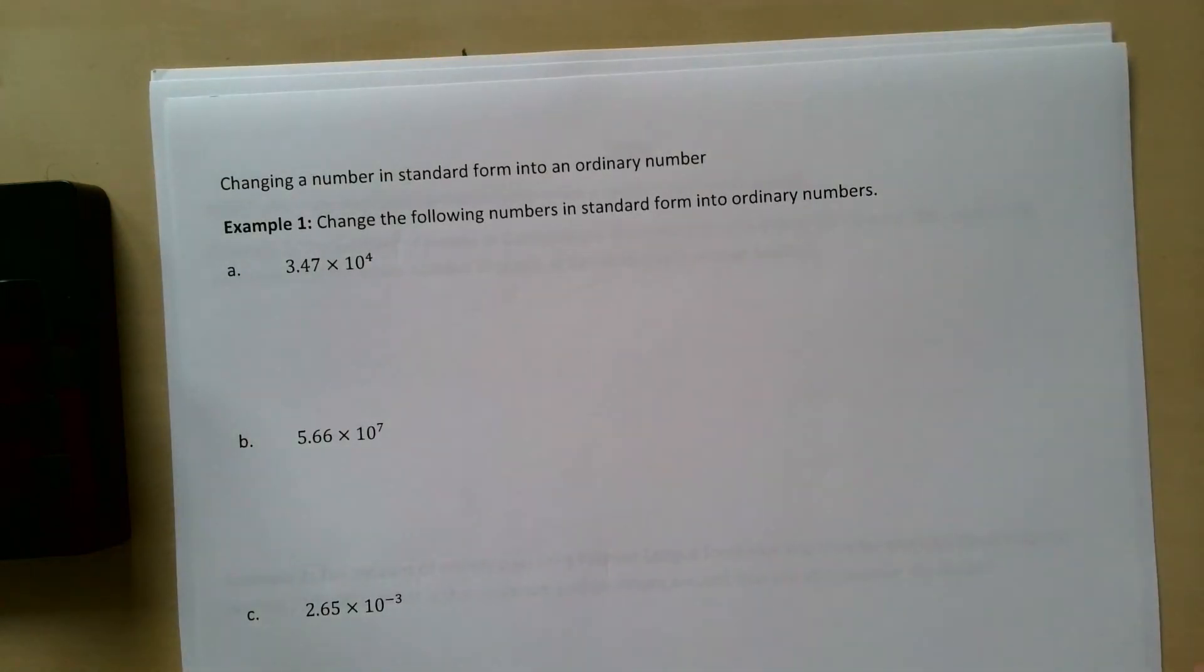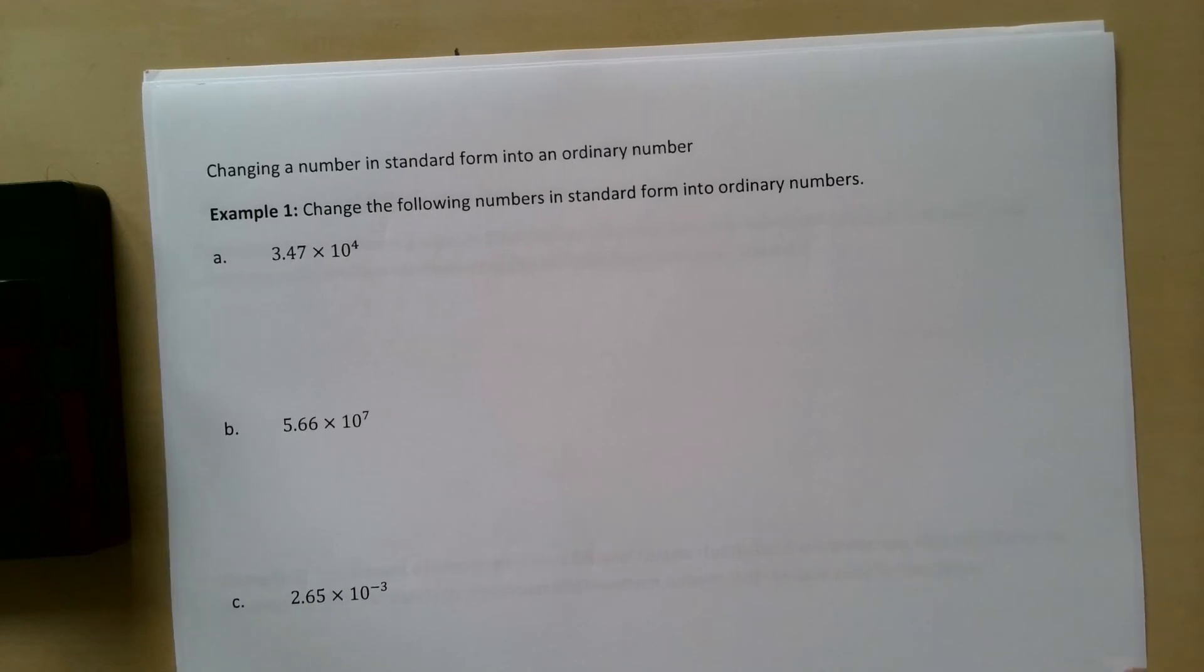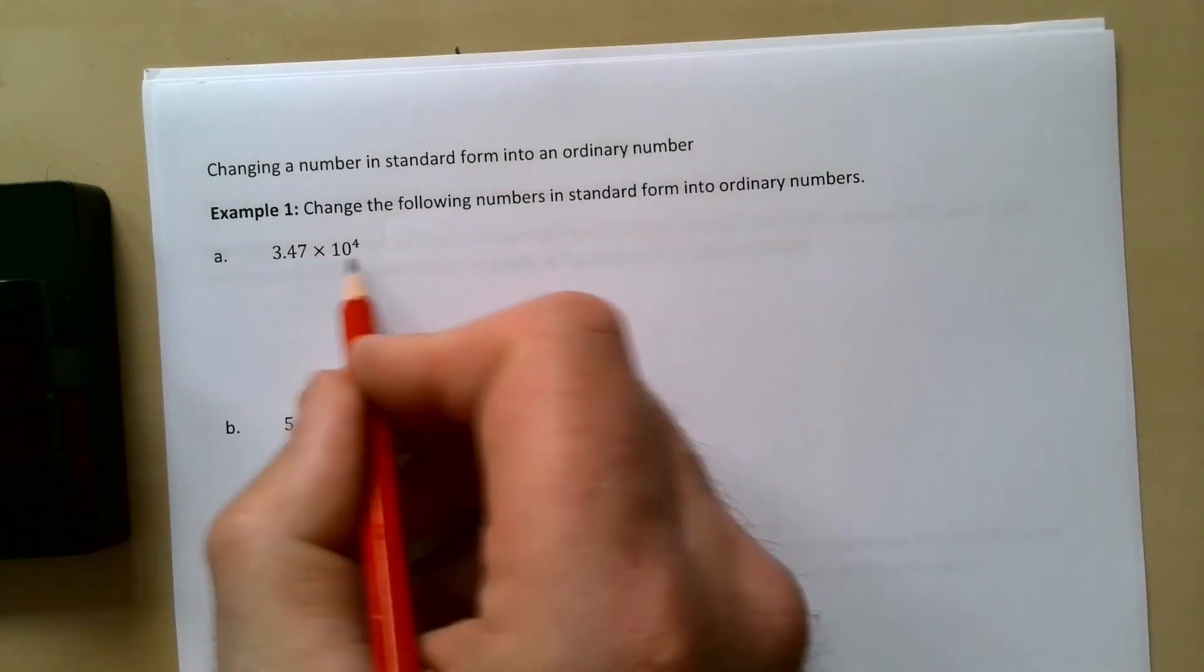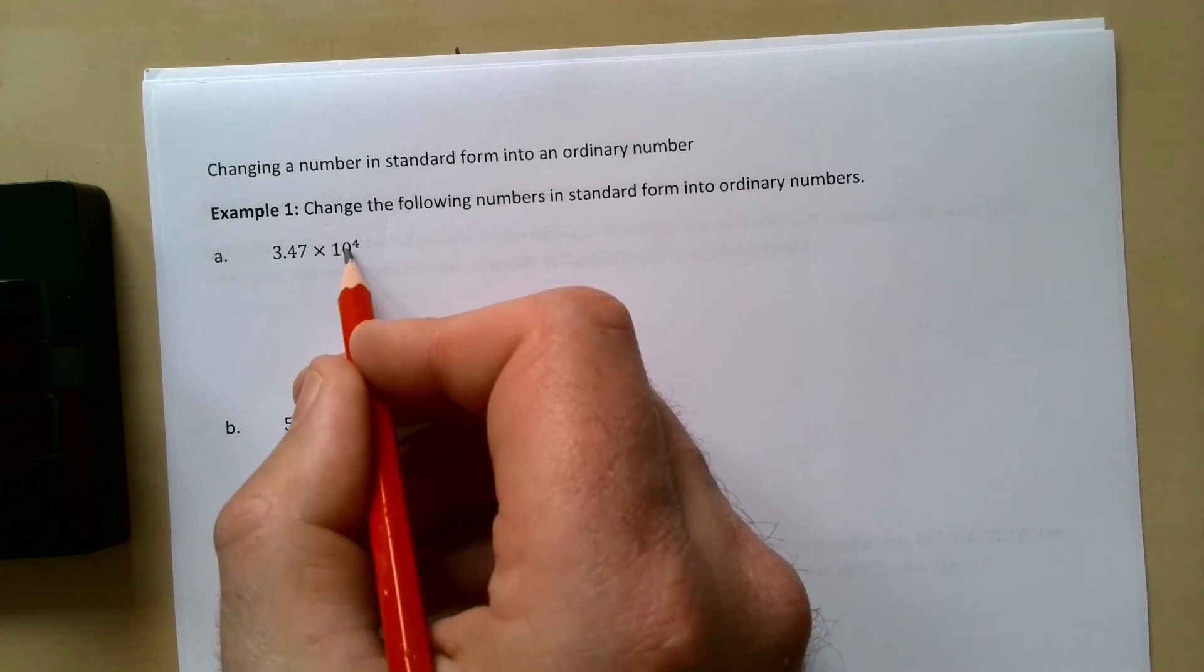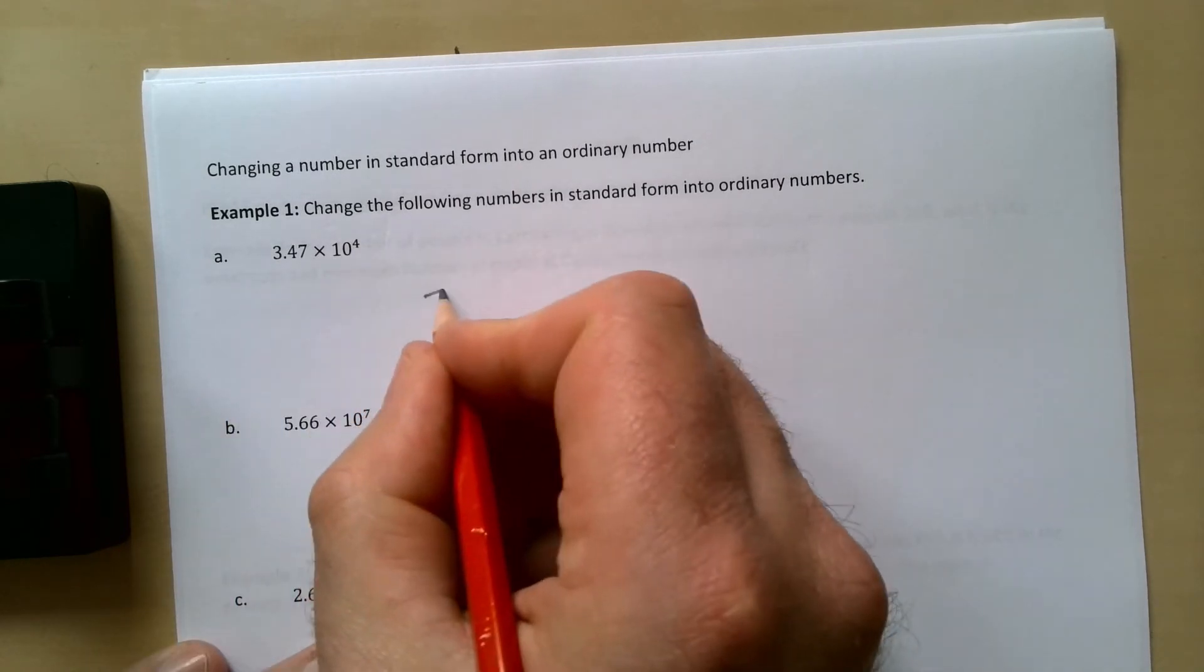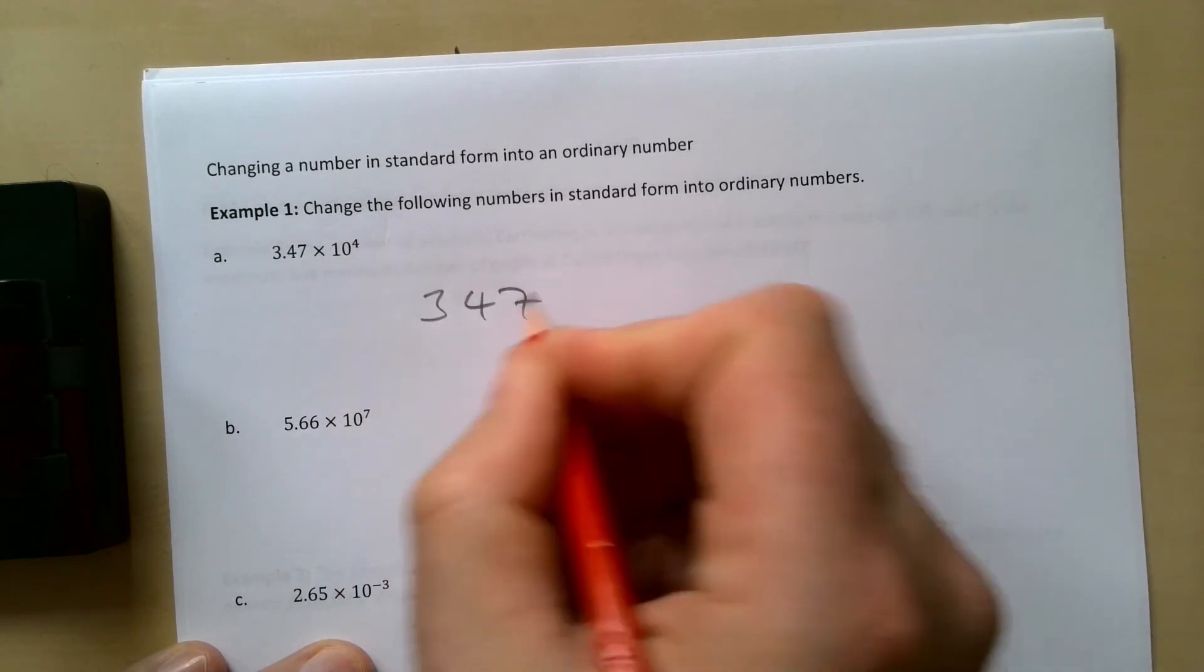Now, changing a number from standard form into an ordinary number. For this one, we need to multiply effectively by 10,000, so we need to move our decimal point. It's going to be 3, 4, 7. That's moving two places, and we need another two places moving up to the four.